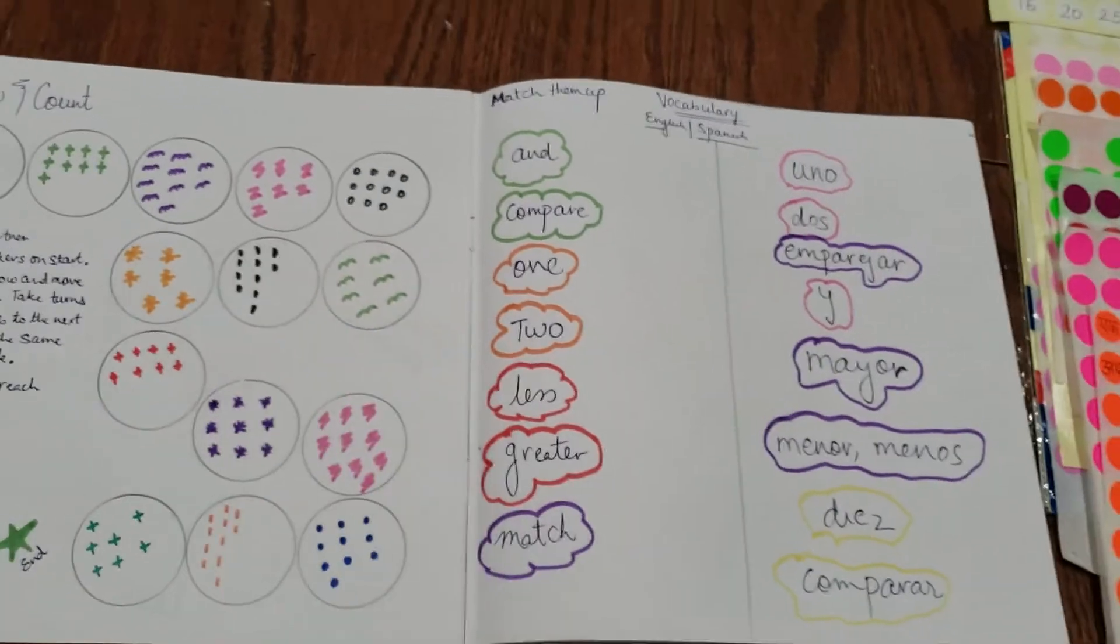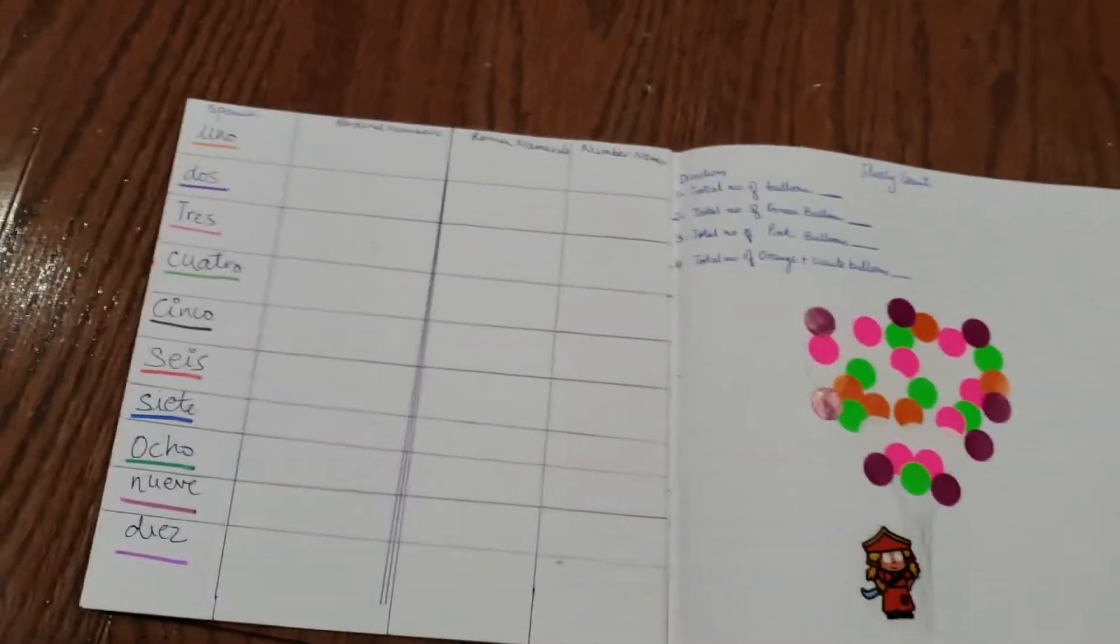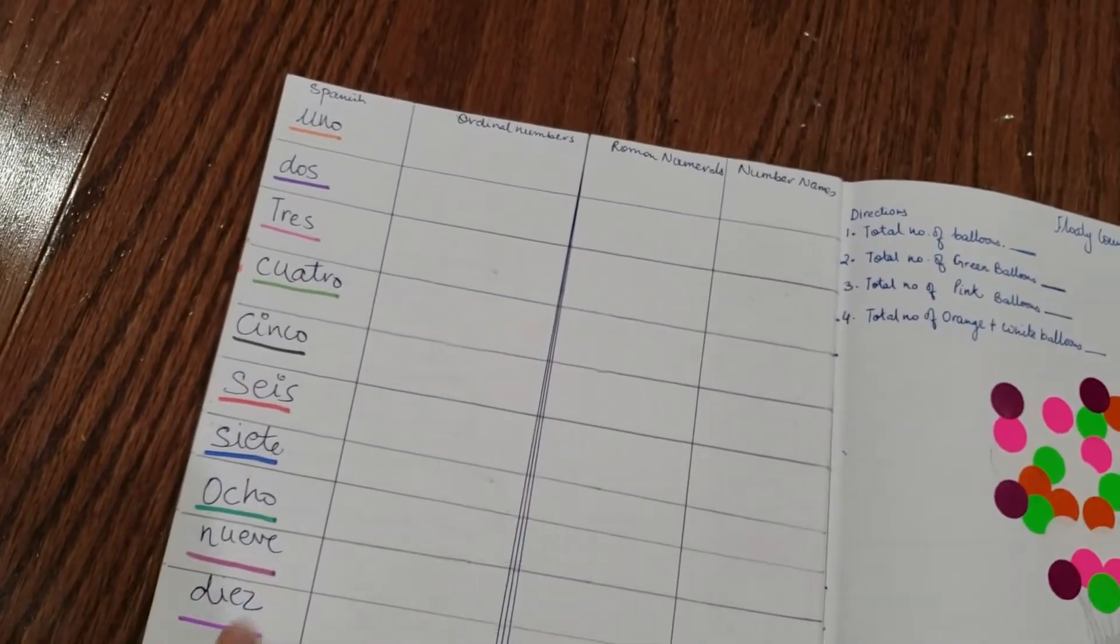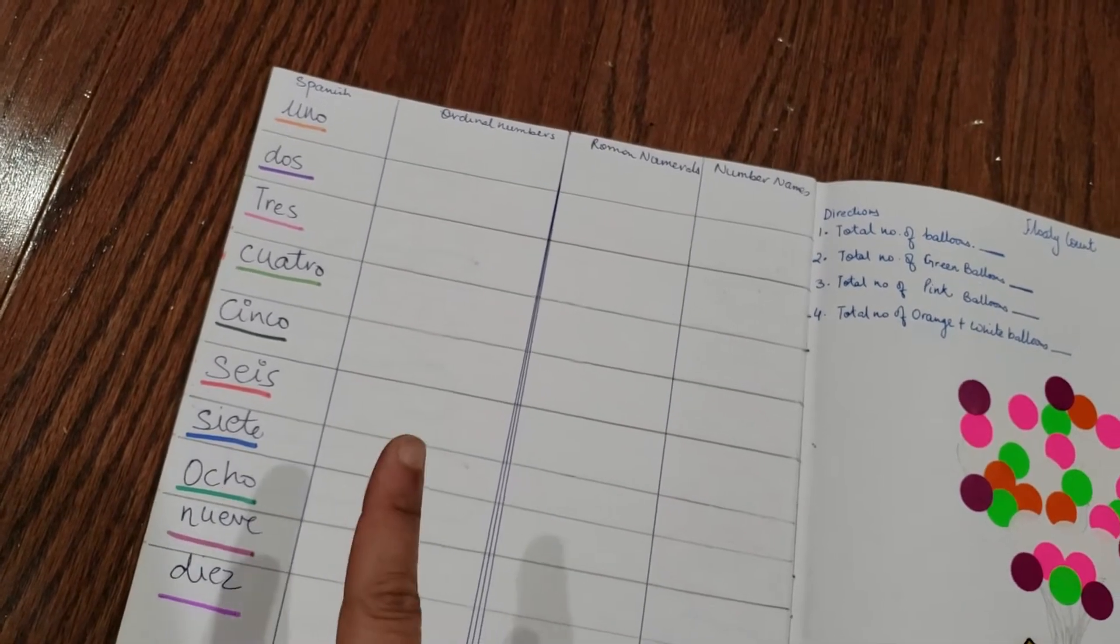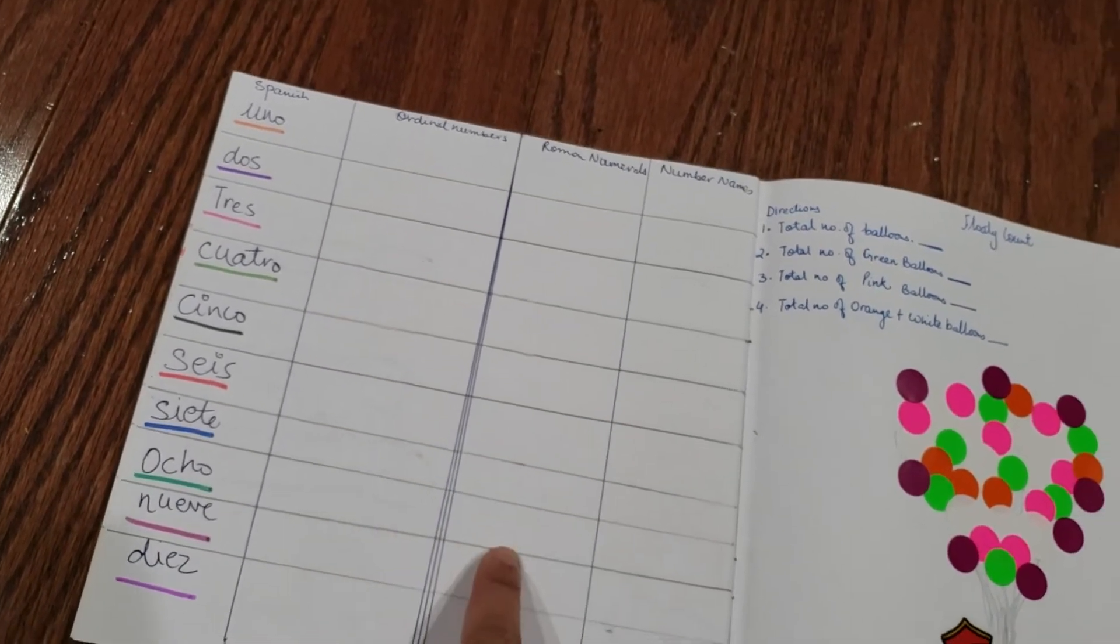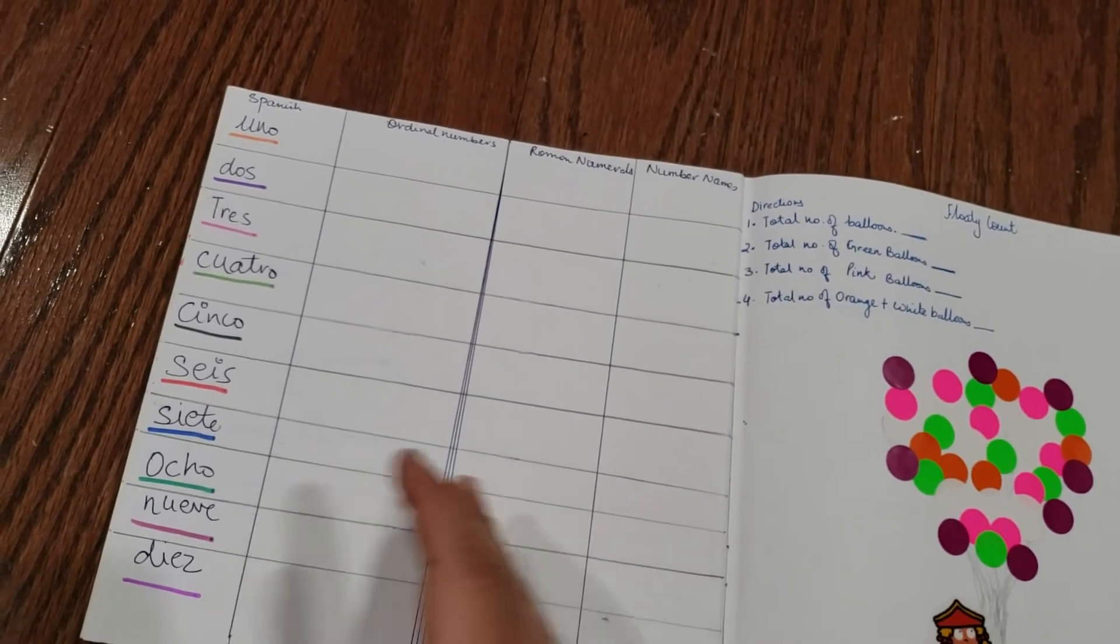Here we have uno to diez, which is one to ten. He needs to write them in ordinal number, Roman numerals, and number names - in three different ways. All three of them we have done before.